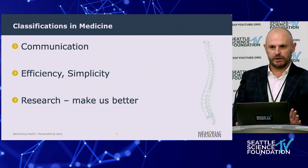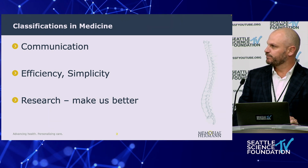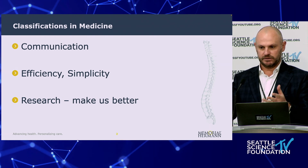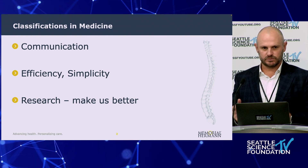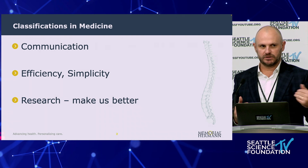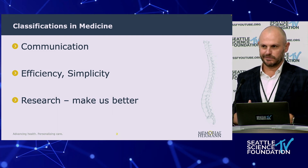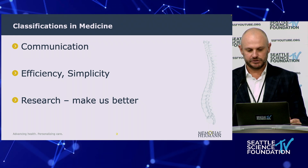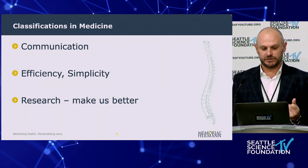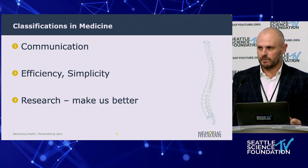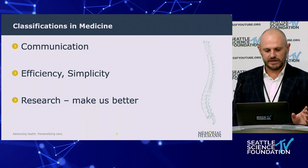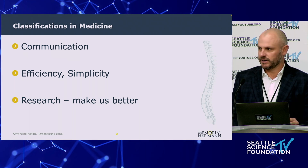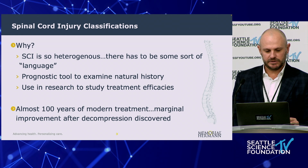We've talked a lot about classification systems already today. The reasons for much of them are communication. Like Jens brought up and others, we can have a resident call us on the phone at two in the morning and say, 'This is a TLX level four,' or 'This is a B3 hyperextension injury.' It just makes for very efficient, simple communication. Classification systems also have a very clear and beneficial use in research that hopefully makes us better over time in taking care of these patients.